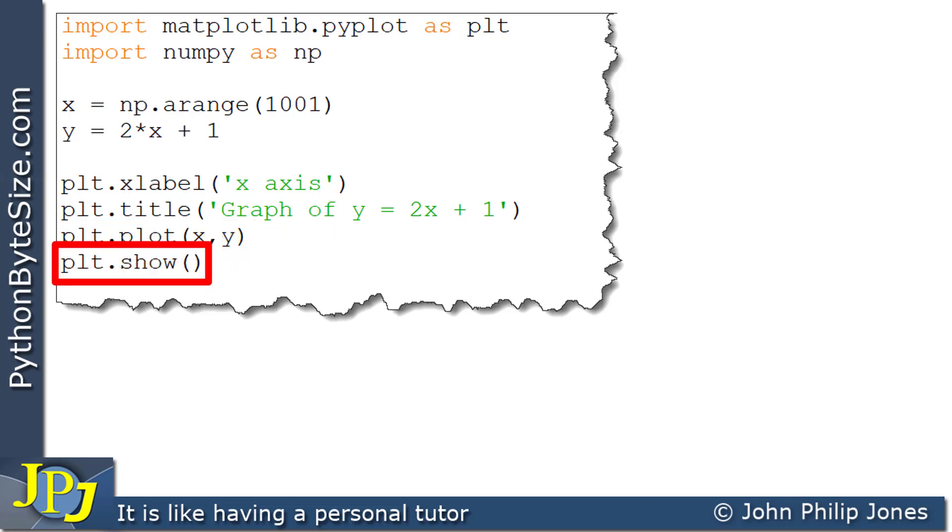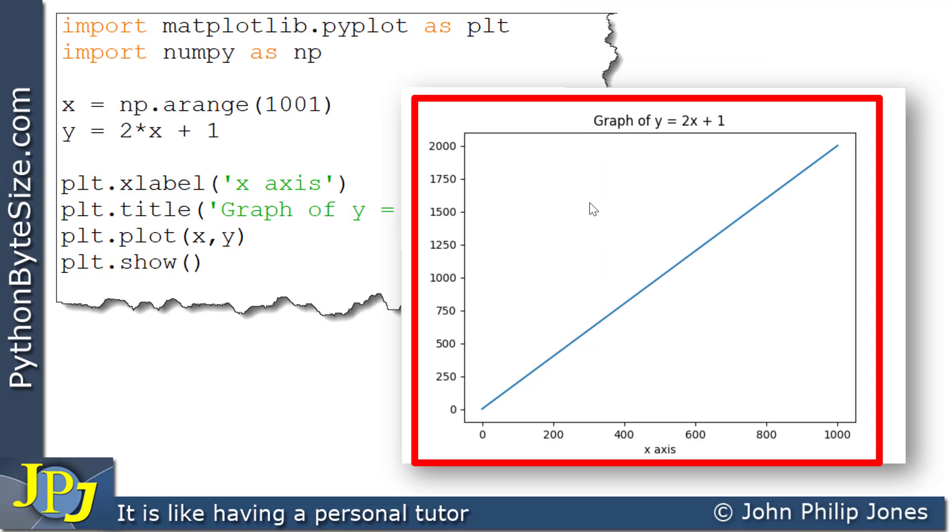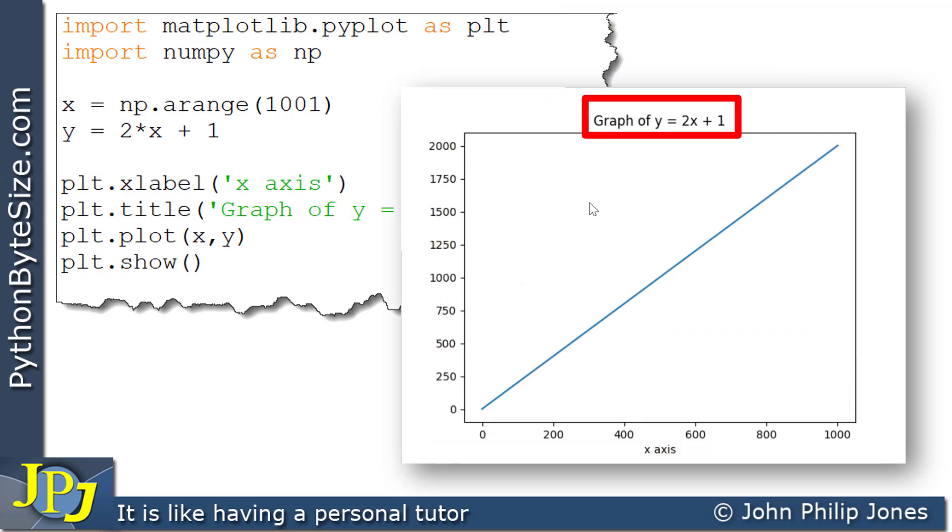And when this program executes, what we will see is the following. And you can clearly see that here we have graph of y equals 2x plus 1, which is the string shown here. A bit of it's hidden now below the graph. And here you can see it says x-axis, which is the string taken from here.